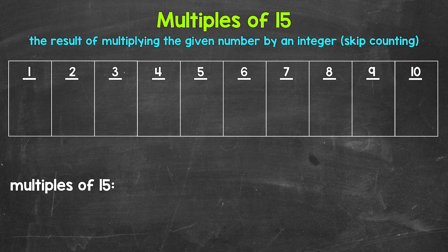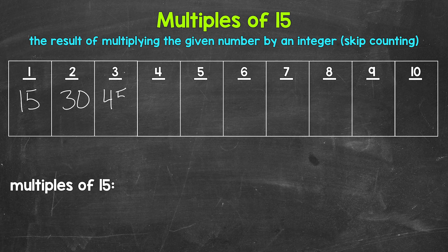Taking a look at the multiples of 15, we'll start with one times 15 — that gives us 15. 15 is the first multiple of 15. Then we have two times 15, that gives us 30. 30 is the second multiple of 15. Then we have three times 15, that's 45. Four times 15 is 60. Five times 15 is 75.